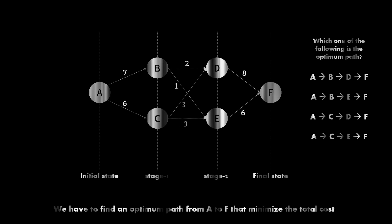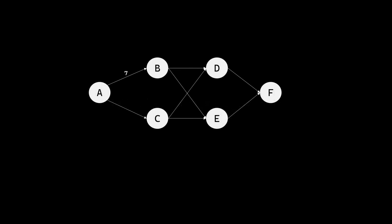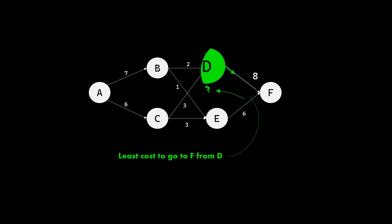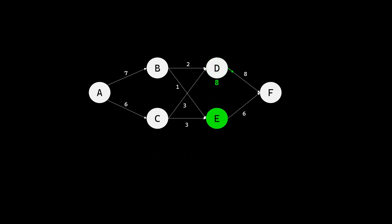Here is how the algorithm works. We start from the last stage. The least cost to go to the destination state F from D is 8. This is easy to determine as there is only one possible way to go to F from D. Notice that we have also marked the optimum direction with a small green arrow. Similarly, the optimal cost to go from E to F is 6.